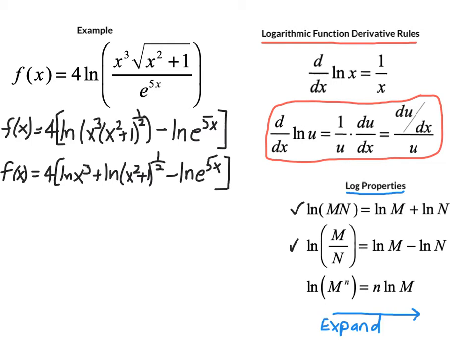The final step in the expansion is typically this power rule where we're taking any exponents that exist inside of the logarithms and we write those as coefficients. So that means we have 4 times the quantity 3 natural log x plus 1 half times the natural log of x squared plus 1 minus the natural log of e to the 5x.